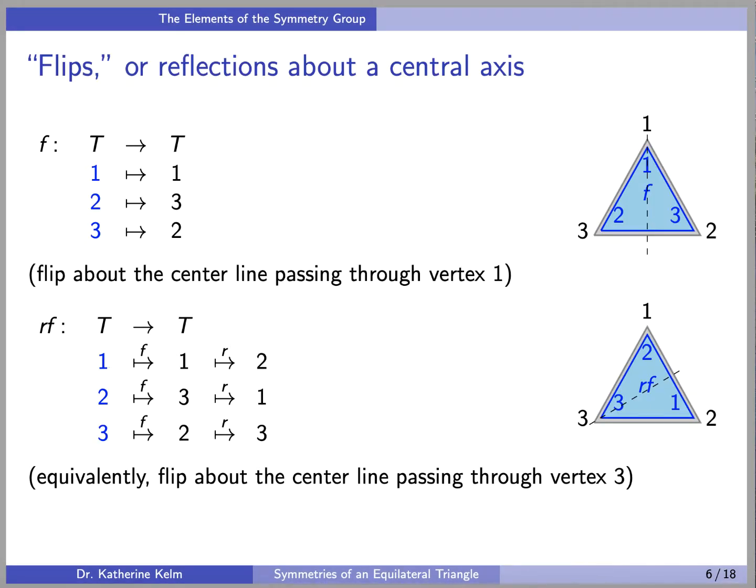We also have the reflections. These are the moves that allow us to see the backside of the triangle. So F from T to T is the function that takes 1 to 1, 2 to 3, and 3 to 2, which corresponds to the flip about the center line passing through vertex 1.